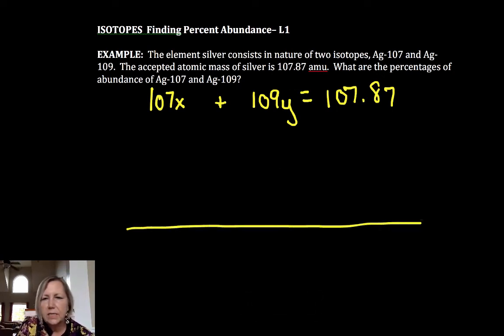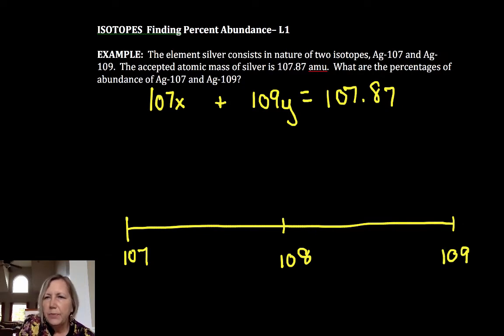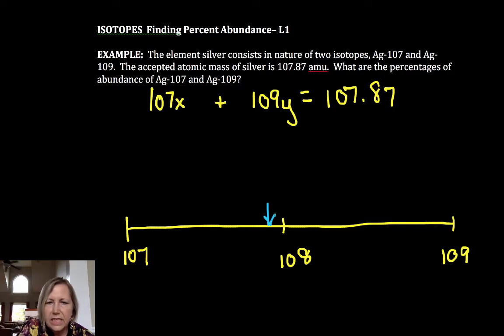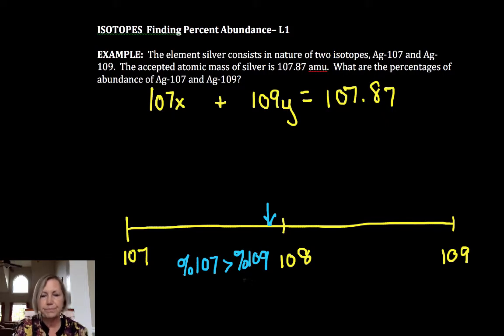What you might want to do is estimate, especially if you're doing multiple choice. So I have 107, 108, and 109. And what's on the periodic table, the 107.87 leans towards the 107 more. You can think of it more as a teeter-totter. And so what we will find, what we should find if we do it right, is the percent abundance of 107 should be greater than the percent abundance of 109 because it's weighted heavier towards the 107.